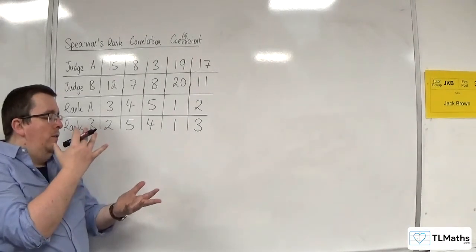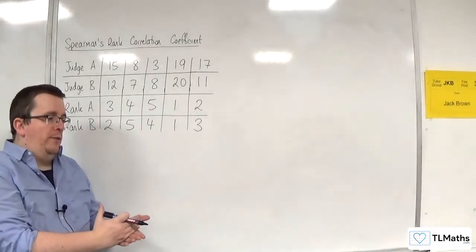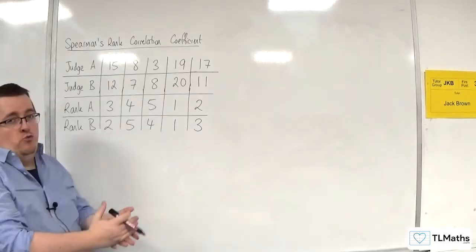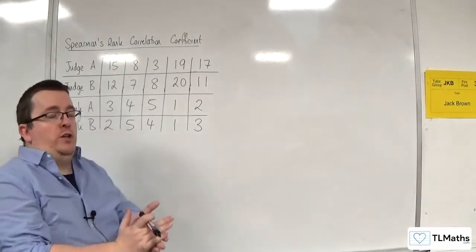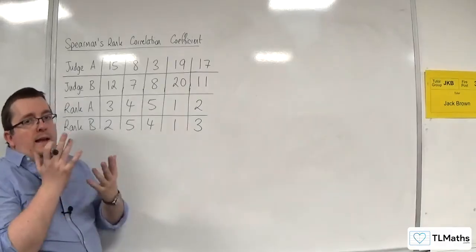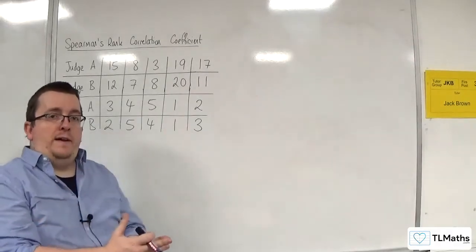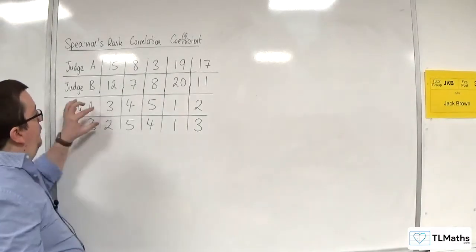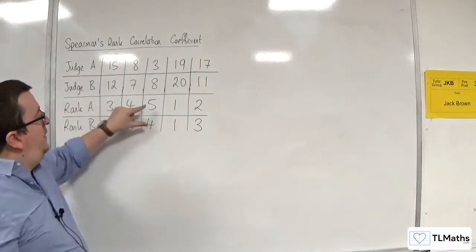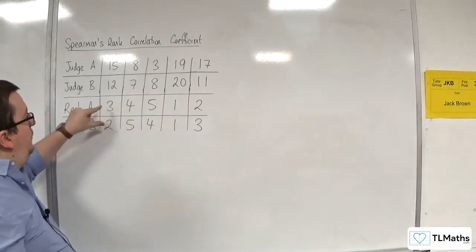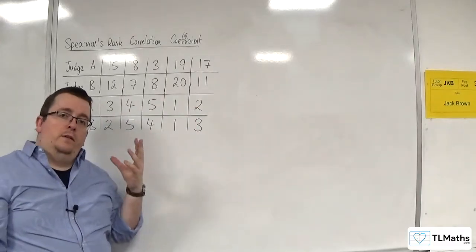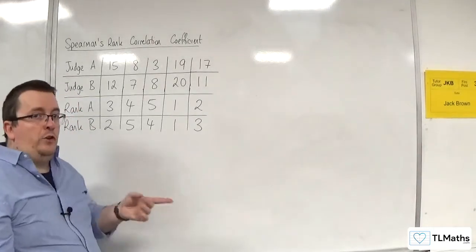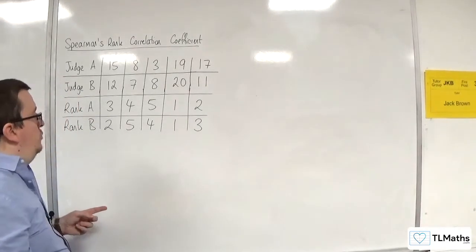Now, the Spearman's rank correlation coefficient actually is derived from the product-moment correlation coefficient formula, and the next video I derive that. So you can see where the derivation actually comes from. So if you find the PMCC of the ranks, you get precisely Spearman's rank correlation coefficient. So that's a good little checking tool there to make sure you've done all this right.